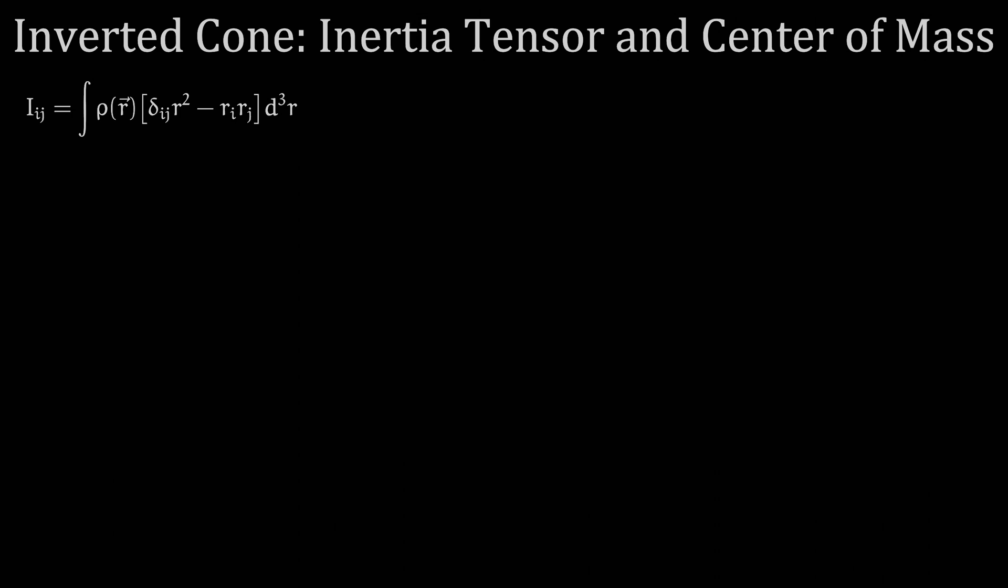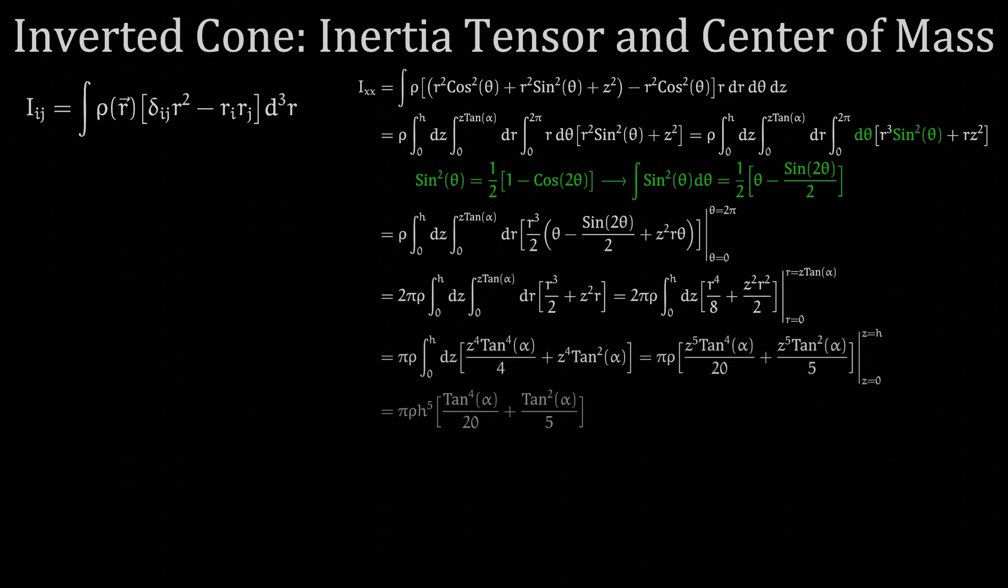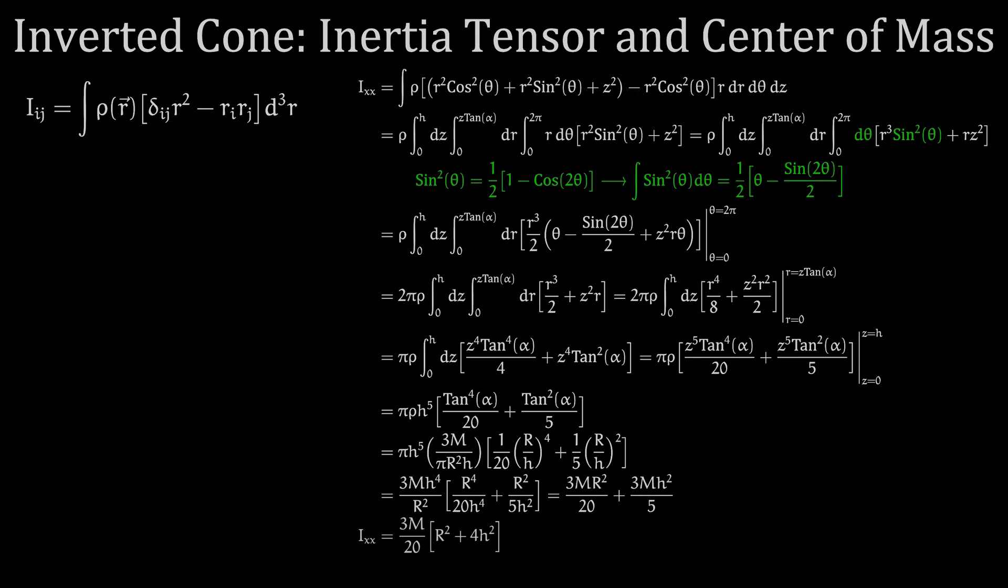Let's start with the element in the first row and the first column, or Ixx. The integral will look like this. Solving the integrals from right to left, making a trigonometric substitution along the way for sine squared, then substituting in R over H for tangent of alpha, and then the density of the cone, we simplify it to find this result for Ixx.